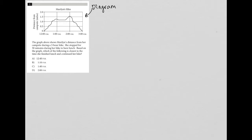So I see here this is Maryland's hike. The x-axis looks like it's times of the day, separated in one-hour increments. And the y-axis is the distance from campsite. So it looks like at 12 she was at the campsite, and then by one, she was about 1.3 or so miles from the campsite.